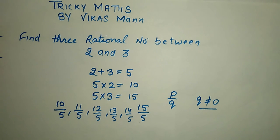Hi everyone, this is Vikas Maan. Today I will tell you how to find three rational numbers between 2 and 3. There are certain steps with these steps. You can find this out within seconds.